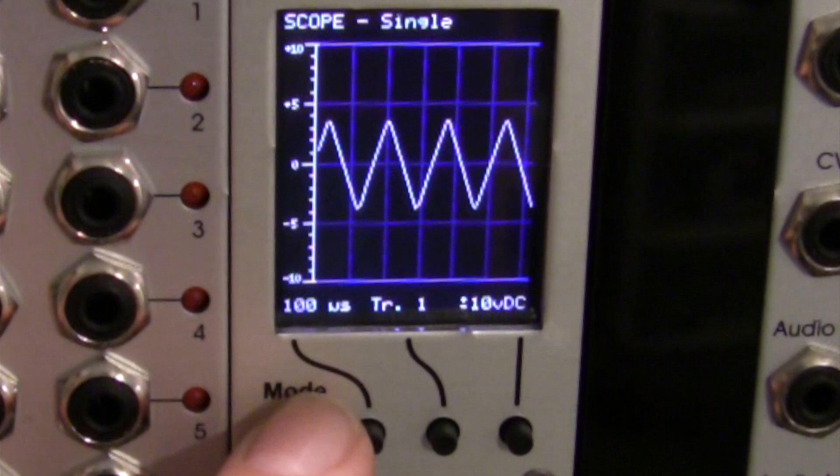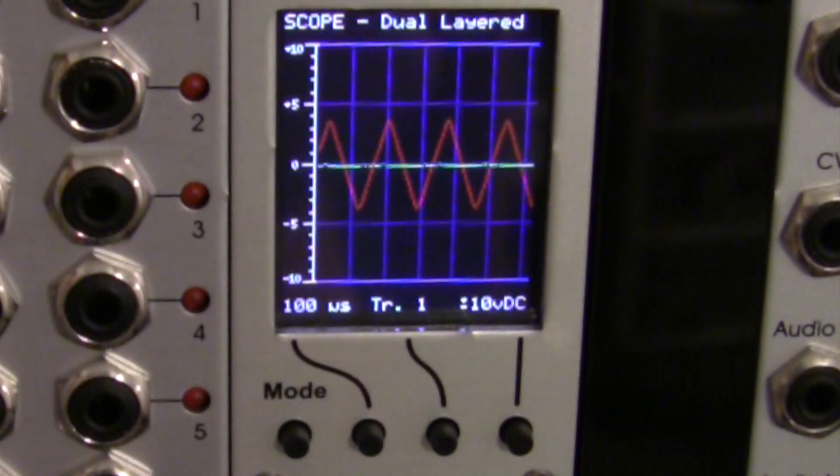This is going to be our dual trace layered mode. So right here you can actually visualize two waveforms at the same time. Right now we're looking at our triangle wave going into input one.